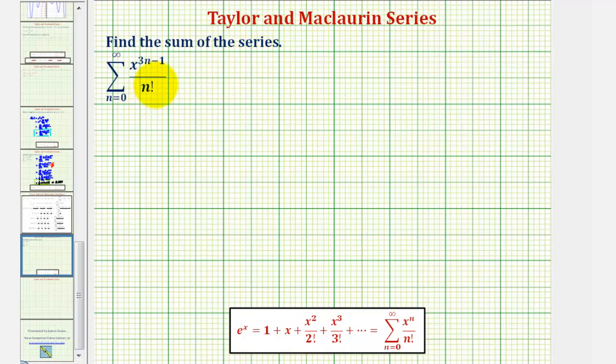We're going to find the sum of the infinite series where we have the summation from n equals zero to infinity of x raised to the power of 3n minus 1 divided by n factorial.